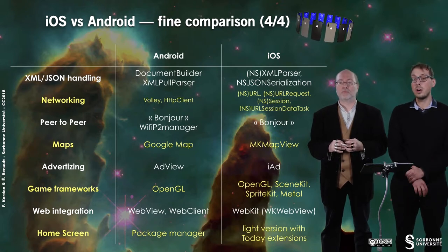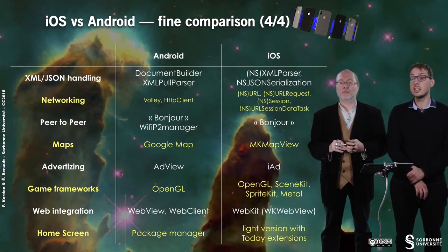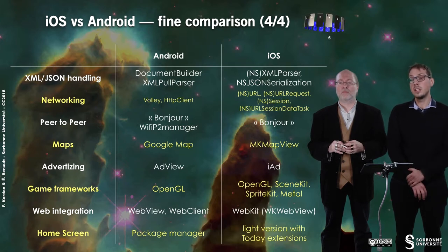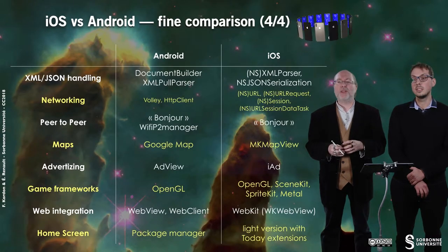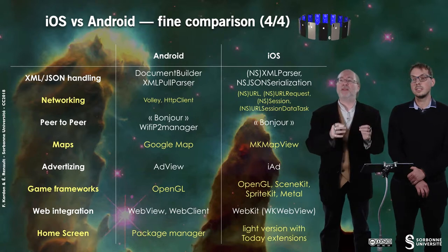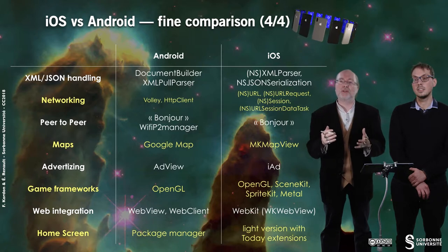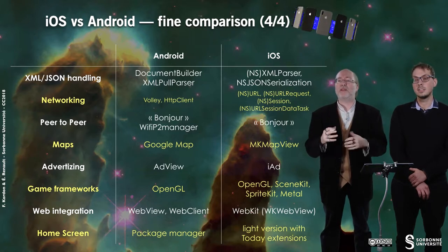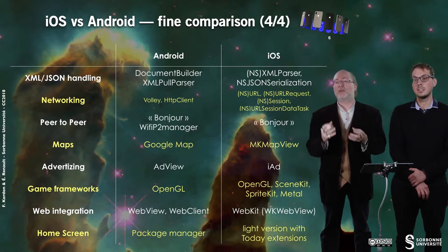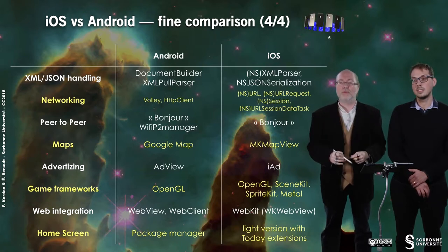Finally, if you want to develop your own home screen, you can do it in Android since a home screen is just an application like any other, and to get a list of installed applications you just use the PackageManager. In iOS, this is not really possible. You have a light version with today extensions — your application can provide today extensions that you can put in the notification center, so when you wake your device you can have restricted information based on your applications.